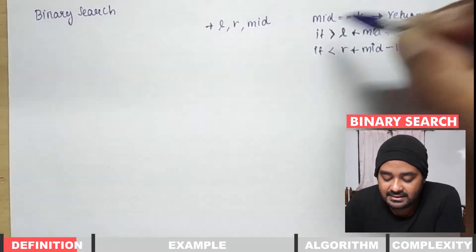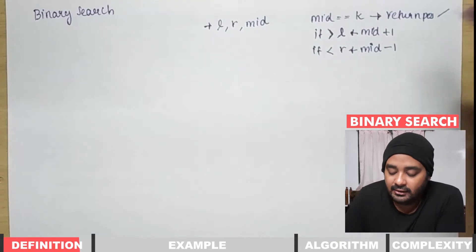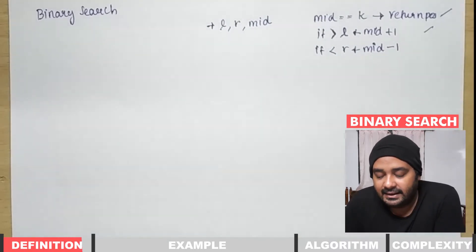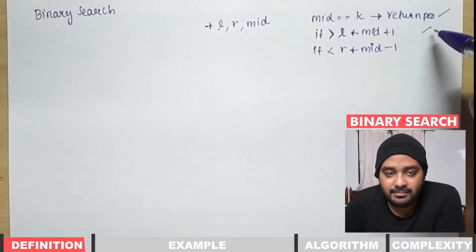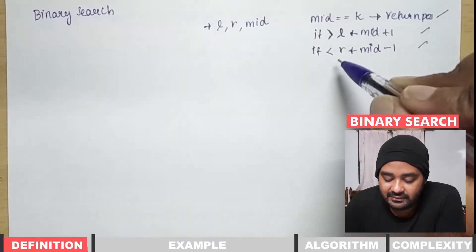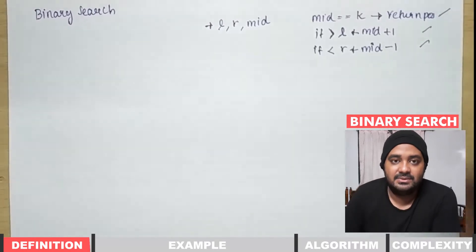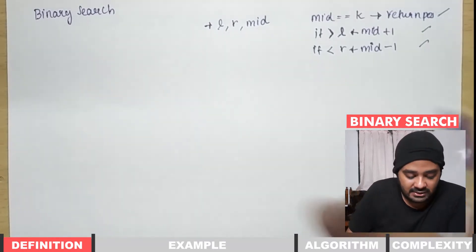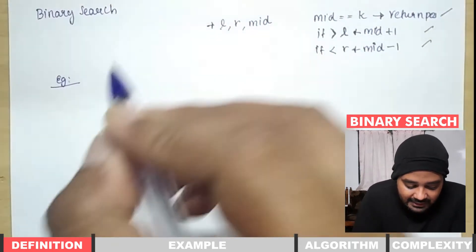To recap the conditions: if the search key matches, we return the position. If the particular value is greater, we assign L with mid plus 1. If the value is smaller, we assign R with mid minus 1. These are the conditions we follow inside the binary search mechanism.